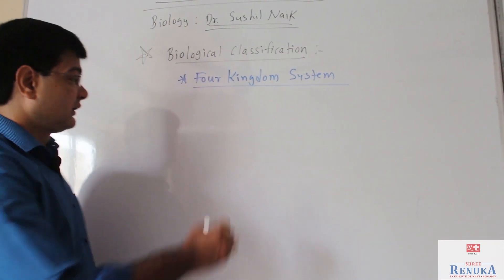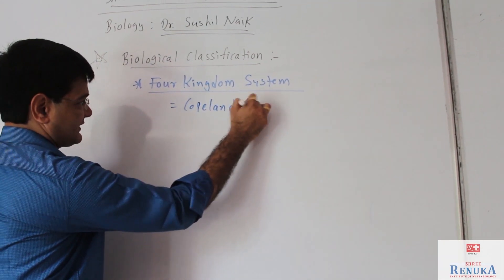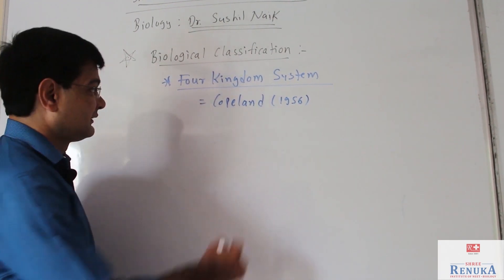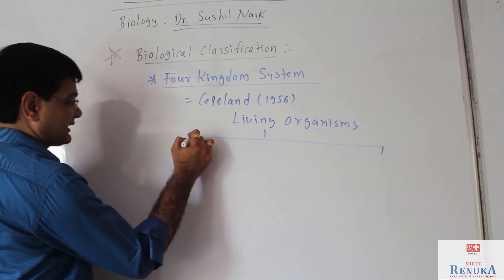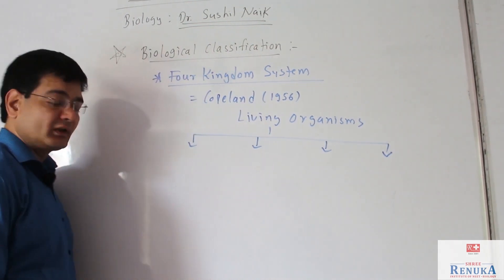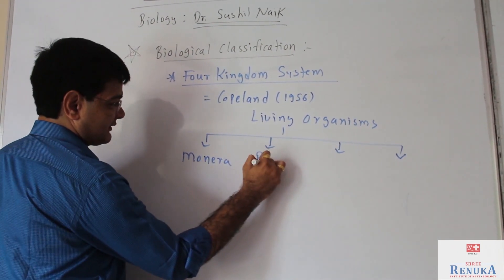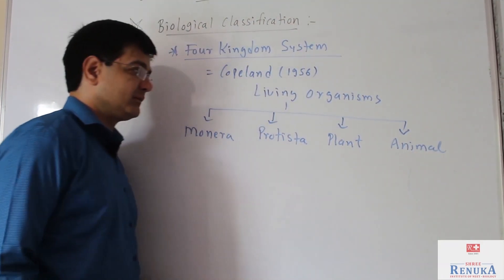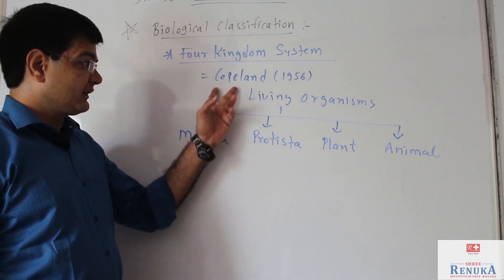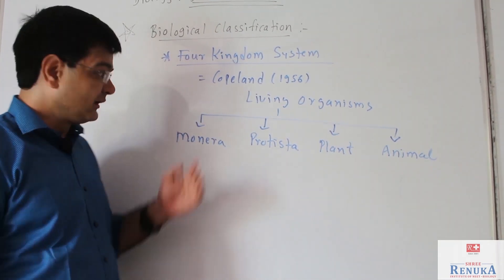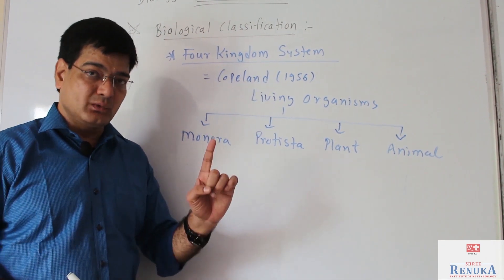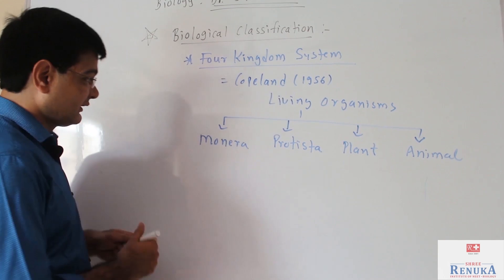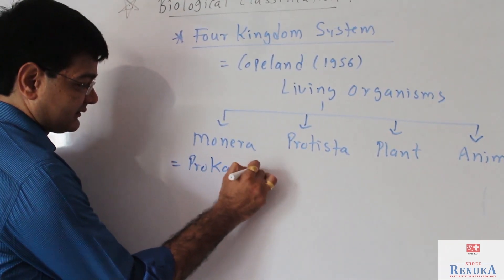The four kingdoms system of classification was given by Copeland, who classified living organisms into four different categories in 1956. In this system, organisms are classified into four kingdoms: Monera, Protista, Plantae, and Animalia. Copeland classified the Monera — the prokaryotic organisms — separately from the Protista. So Linnaeus gave the two kingdom system, Haeckel gave the three kingdom system, and Copeland gave the four kingdom system.